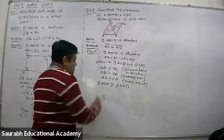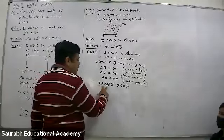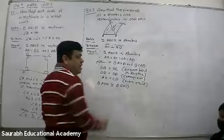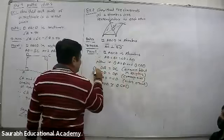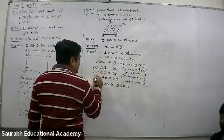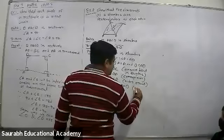So triangle AOD congruent triangle COD. Right? Which rule? Side, side, side. Right now here: side, side, side. SSS rule.